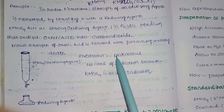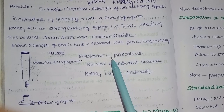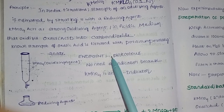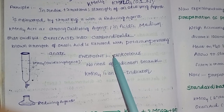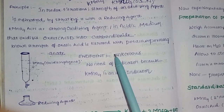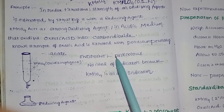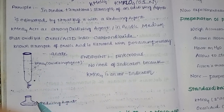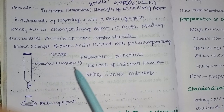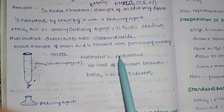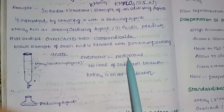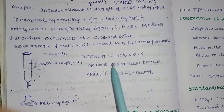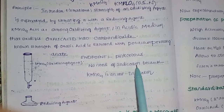Now, how do we know the end point? The end point is identified by a color change. There is no need for an indicator because KMnO4 itself acts as a self-indicator. The end point is indicated by a permanent pink color.